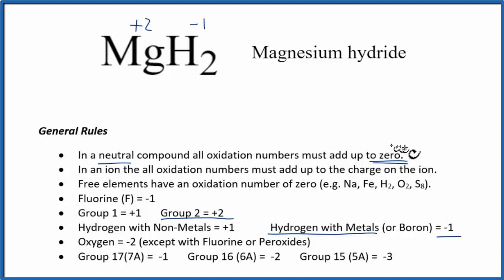And these should add up to zero. So we have a plus 2 plus this minus 1 here, times the two hydrogens, because the minus 1, that's on each of the hydrogens. That should equal zero. Plus 2 plus minus 2 equals zero.